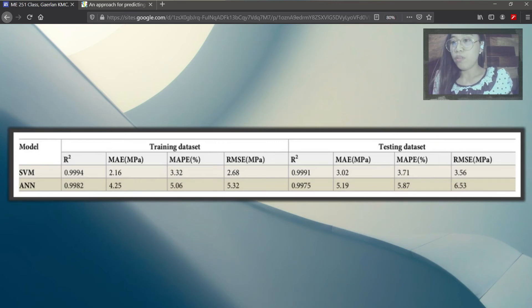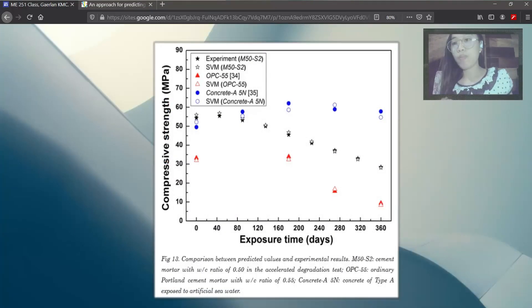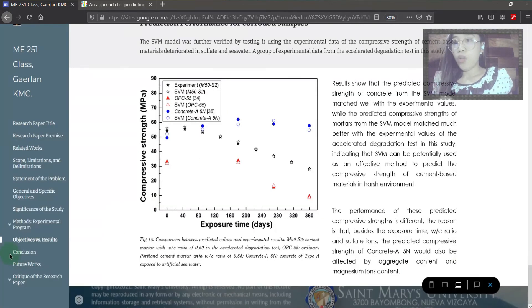The SVM model was further verified by testing it using the experimental data of the compressive strength of cement-based materials deteriorated in sulfate and seawater. Results show that the predicted compressive strength of concrete from the SVM model matched well with the experimental values, while the predicted compressive strength of mortars from the SVM model matched much better with the experimental values of the accelerated degradation test. The performance of this predicted compressive strength is different. The reason is that besides exposure time, water-cement ratio and sulfate ions, the predicted compressive strength of concrete would also be affected by aggregate content and magnesium ions content.